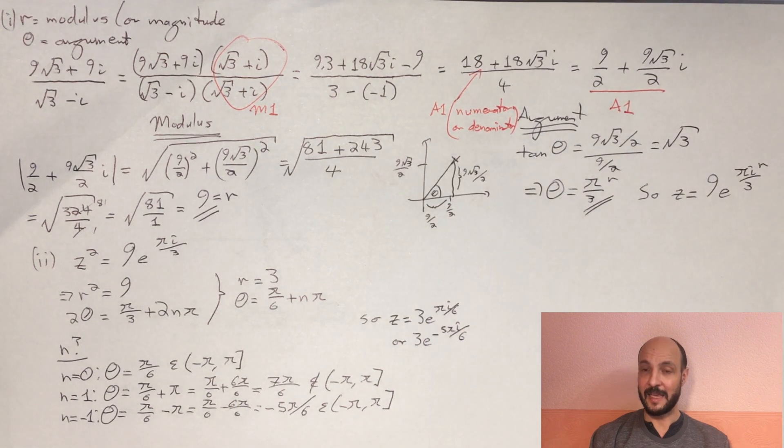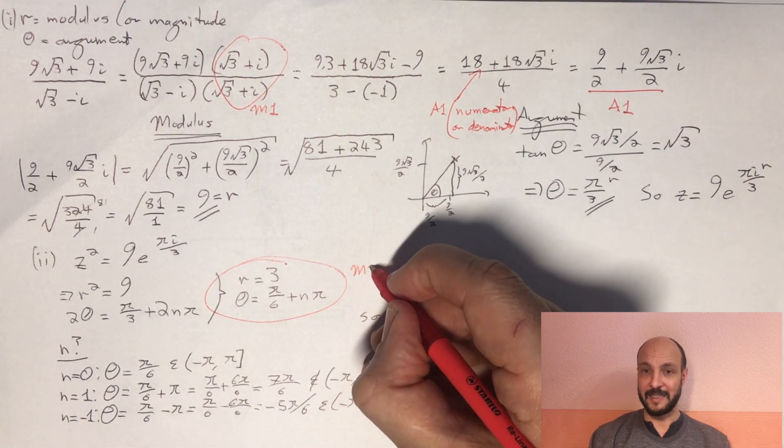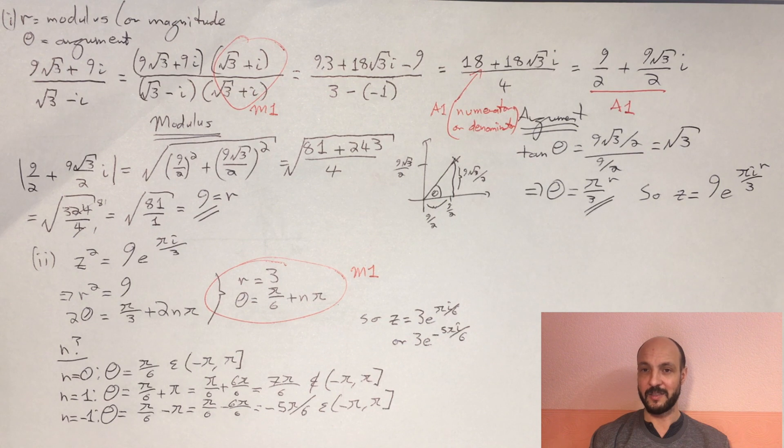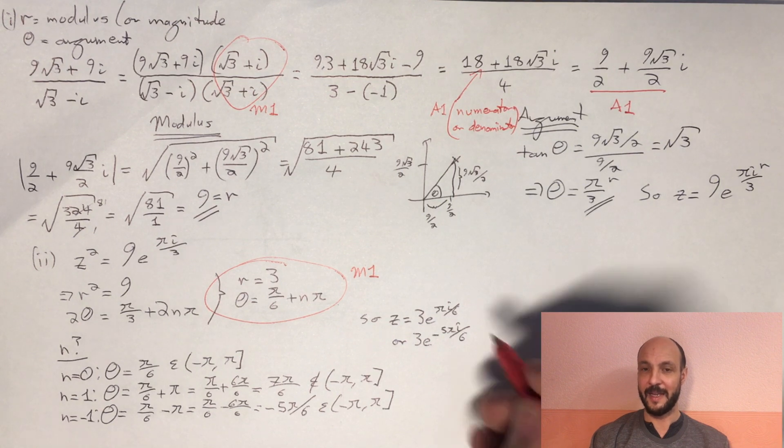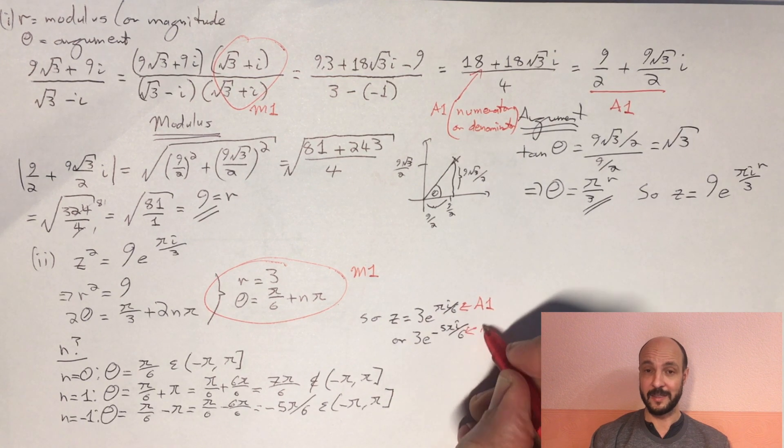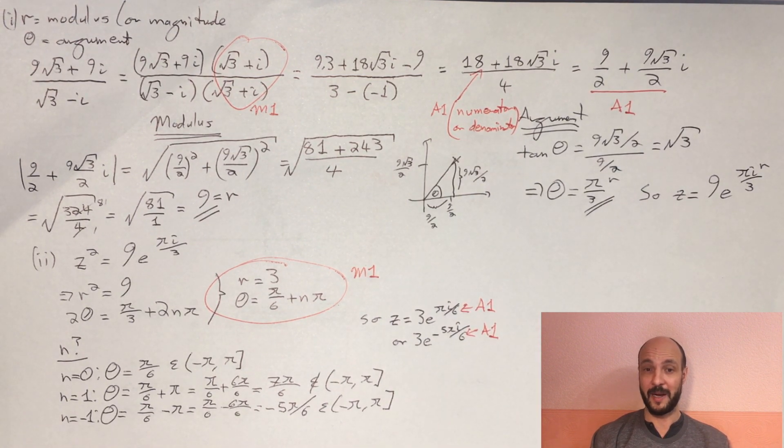And then in the second part, we've got a method mark for finding our r and our argument, so finding that we've got a magnitude of 3 and then we've got an argument of π/6 + nπ. And then we get one accuracy mark each for each of the two answers, 3e^(πi/6), or 3e^(-5πi/6).